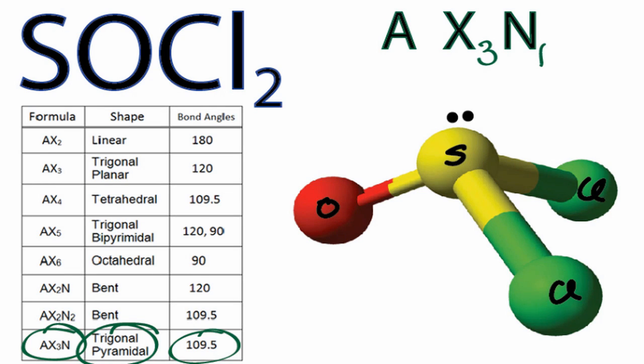So this is our trigonal pyramidal molecular geometry for SOCl2, and we know that these bond angles here are about 109.5 degrees, and that's the same as the bond angle here, and then the bond angle on the other side.